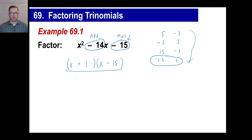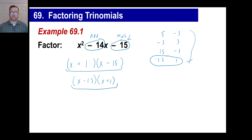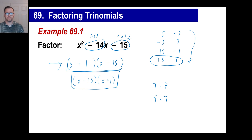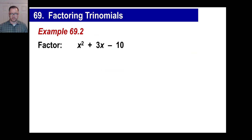Now, in the back of the book you might see x minus 15 times x plus 1. Does it matter what order things are if you multiply them? Seven times eight — is that any different from eight times seven? Obviously no. So it doesn't matter here either. If you get this as your answer and the book says that, you got it. No problem. Let's try another one — go ahead and copy this down.